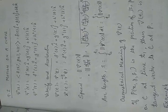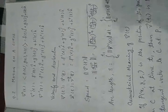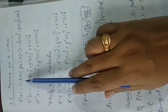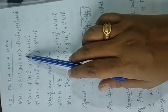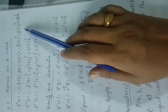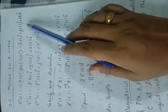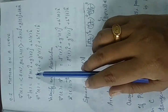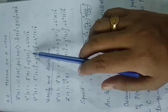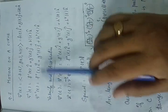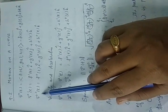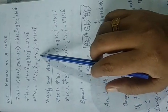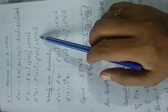In section 9.1, we studied that the vector function in 3-space has the form R(t) = F(t)i + G(t)j + H(t)k. Its first derivative is R'(t) = F'(t)i + G'(t)j + H'(t)k, and the second derivative is R''(t) = F''(t)i + G''(t)j + H''(t)k.